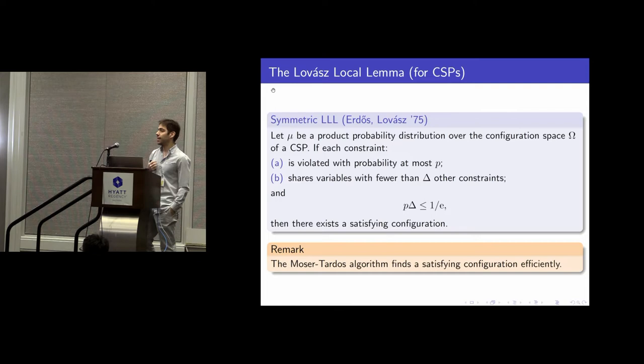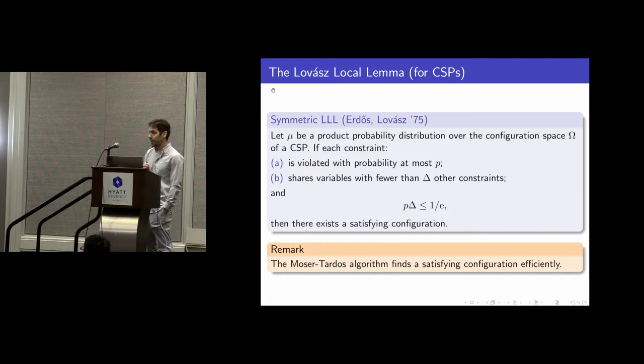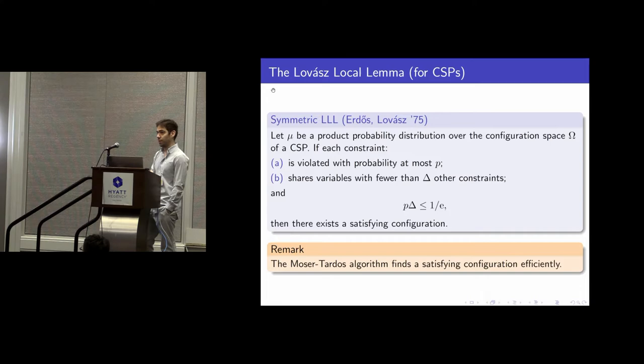This is what the local lemma says, and it is an existential statement in that in the original proof, the probability of avoiding the violation of every constraint could be exponentially small in the size of the input. The beauty and elegance of the Moser-Tardos algorithm is that they use a simple stochastic local search procedure to efficiently retrieve solutions whenever this condition holds.